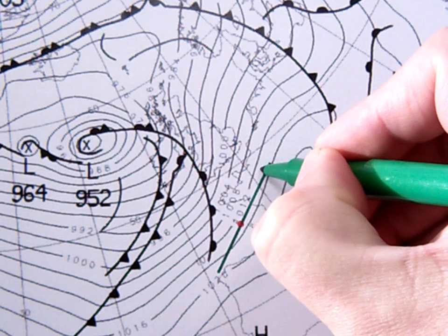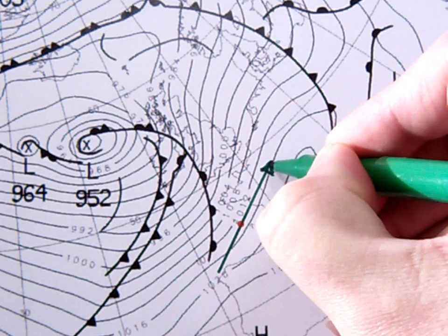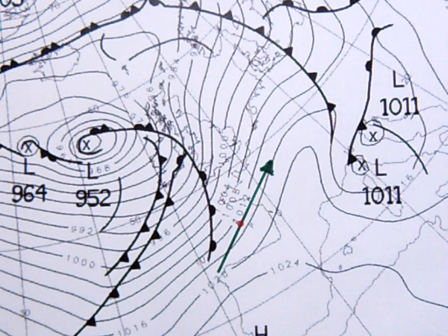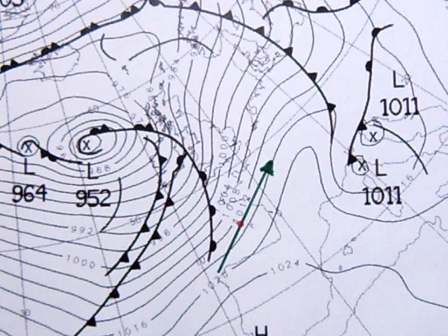So I therefore need to color in the other end to make my arrow. So that is the direction of the geostrophic wind speed.